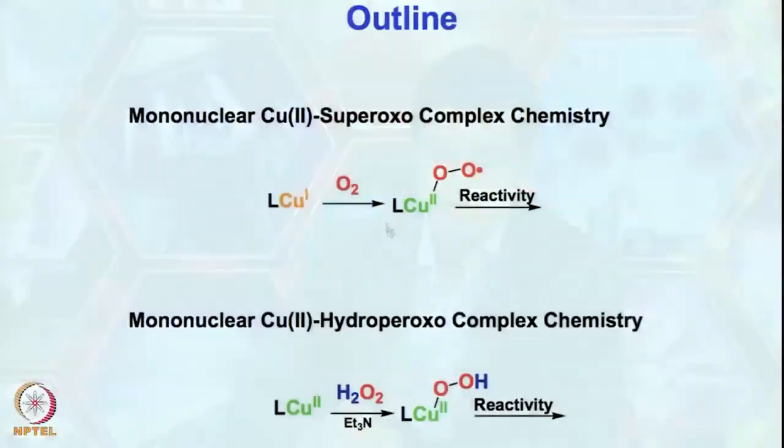Why are we interested in such mononuclear copper-oxygen intermediates? This is precisely because there are a number of enzymes where such mononuclear copper-oxygen species have been implicated as key intermediates for carrying out enzyme activity. In nature and biological systems, we have proposals for both a copper superoxo and a copper hydroperoxo intermediate for doing substrate hydroxylation chemistry.